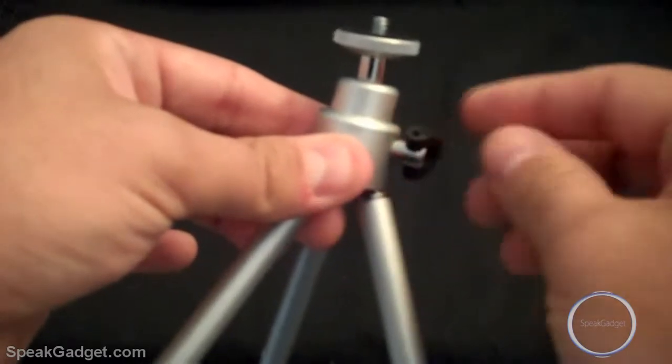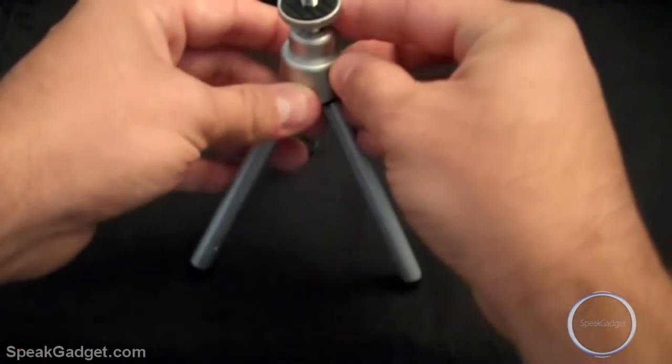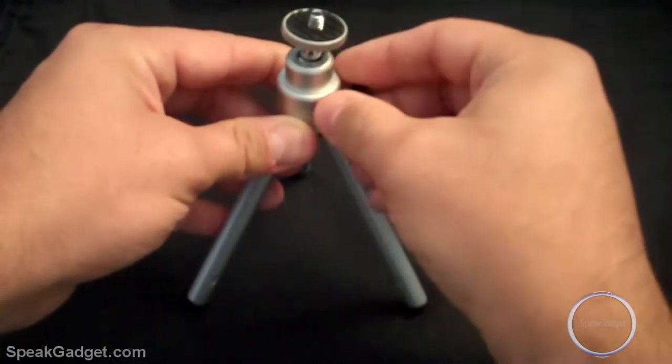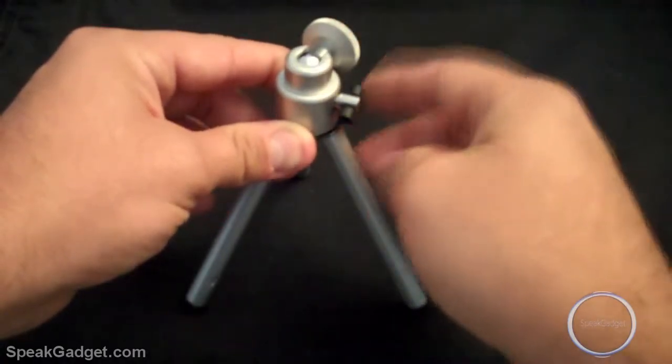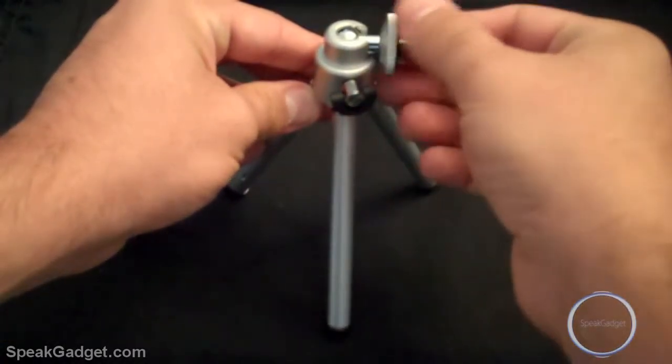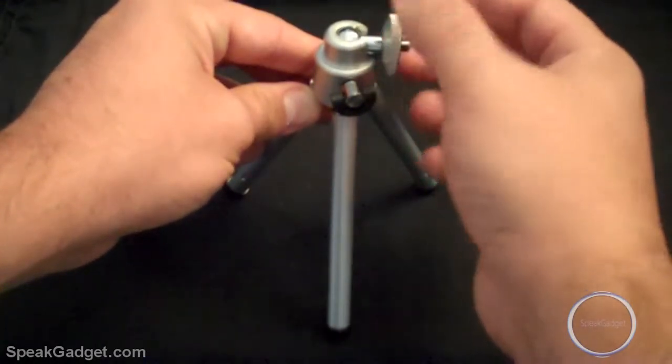It's also got a little latch here which you can use. So when you pop in your camera, you have it down like this, go ahead and turn this to the right, and this comes down allowing you to grab your camera and put it here.